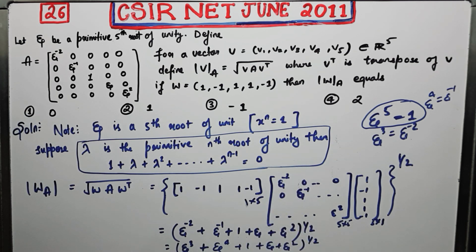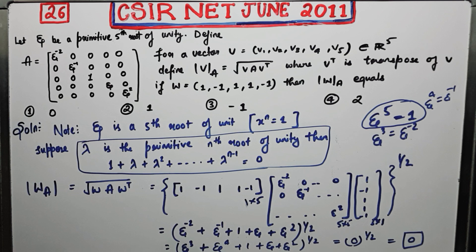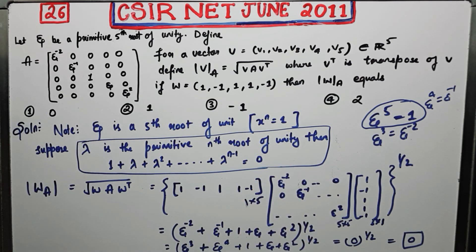From the key property of primitive nth roots of unity — that 1 + xi + xi^2 + xi^3 + xi^4 = 0 — this entire expression equals 0. So you get 0^(1/2) = 0. The answer is 0. You just need to remember what a primitive nth root is and its property: the sum of all nth roots of unity equals 0. By using this property, one can easily show that the answer is 0. Thank you guys.